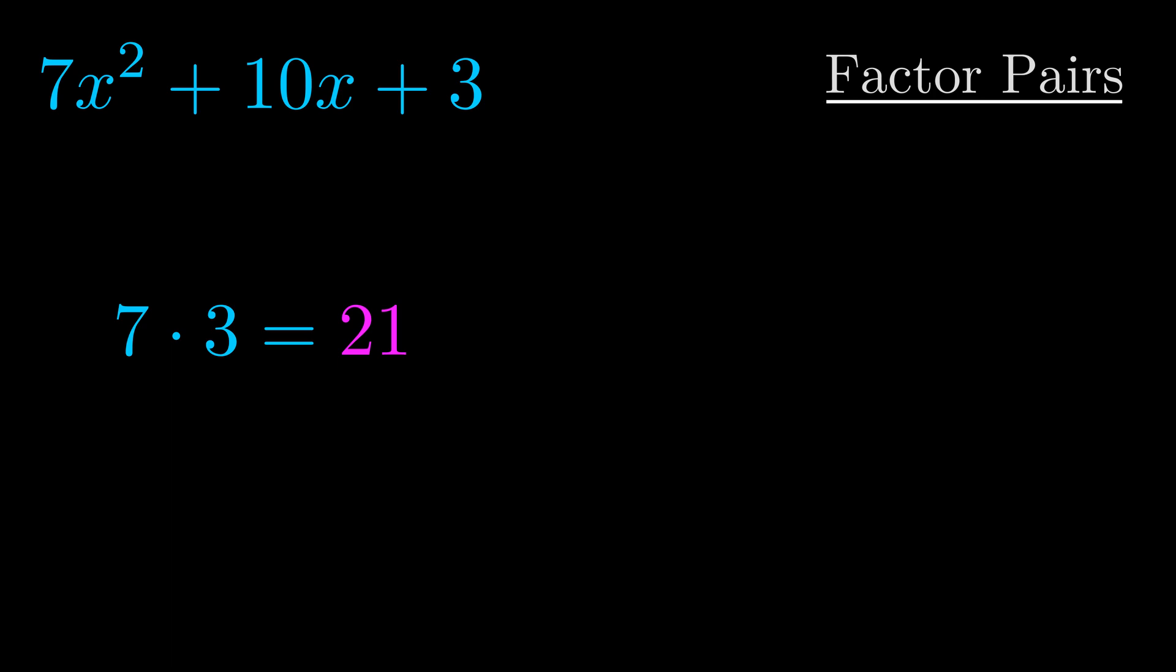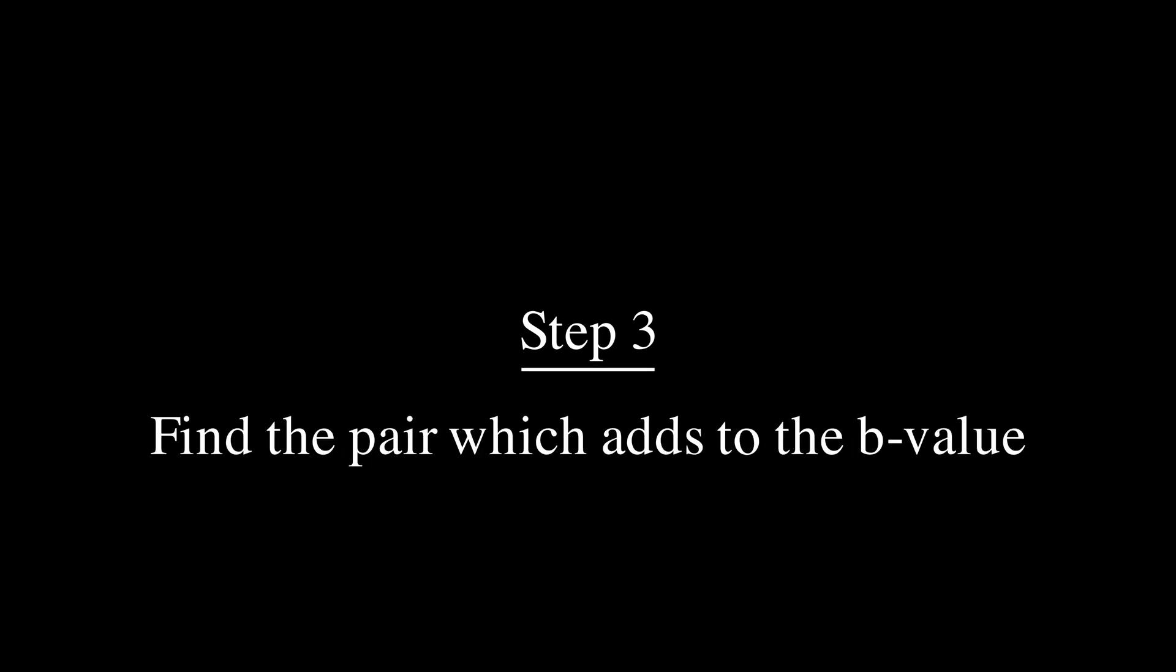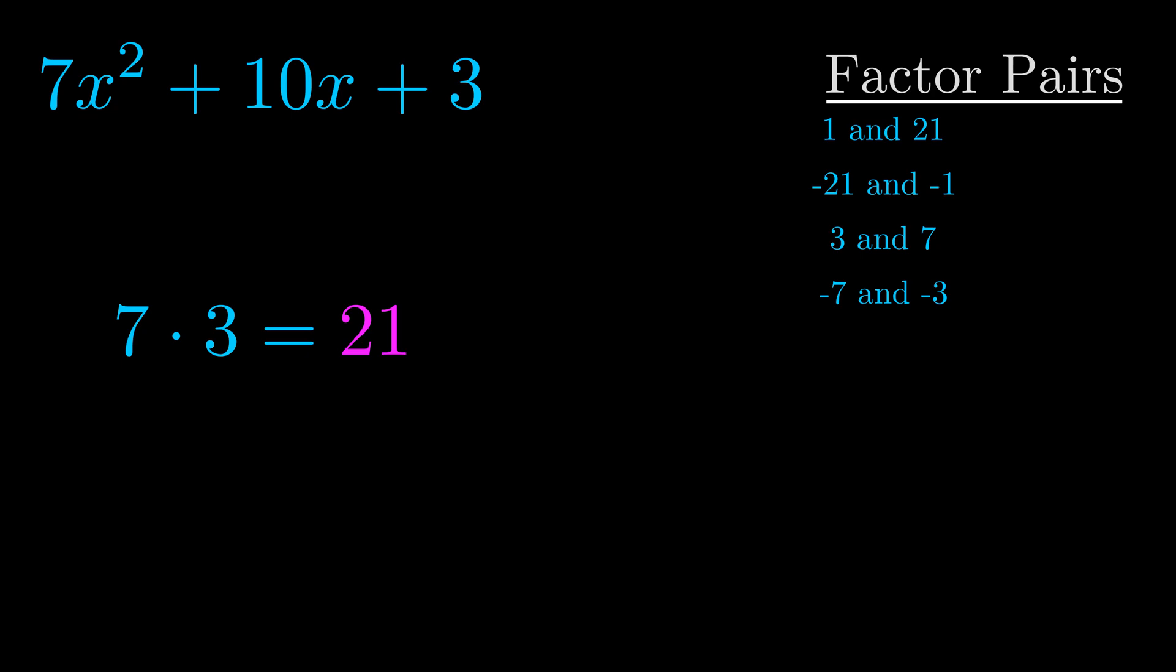Okay here's what I came up with. Now once you have these factor pairs the goal is to find which of these pairs adds to the b value. The b value is the coefficient on the x term. That's the middle term, the one that we haven't done anything with yet. And really this is the only factor pair that we need.